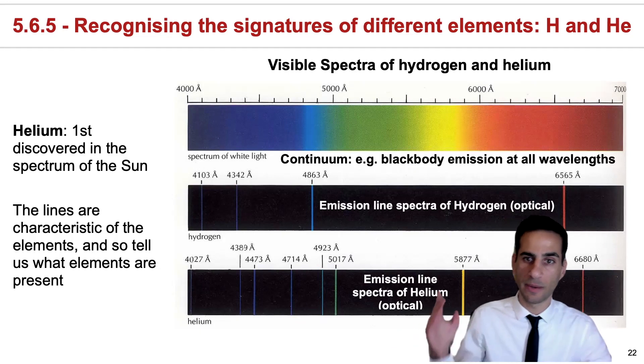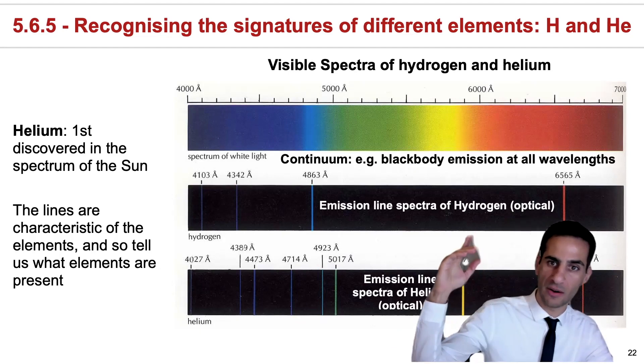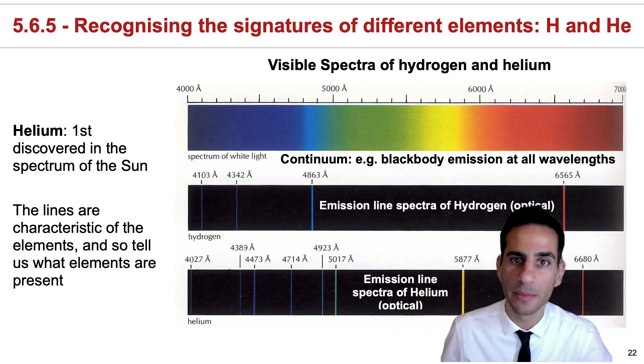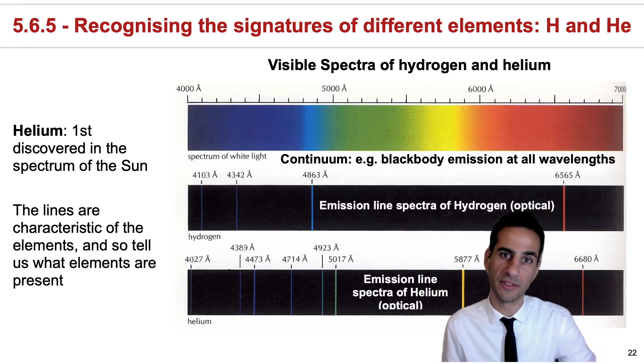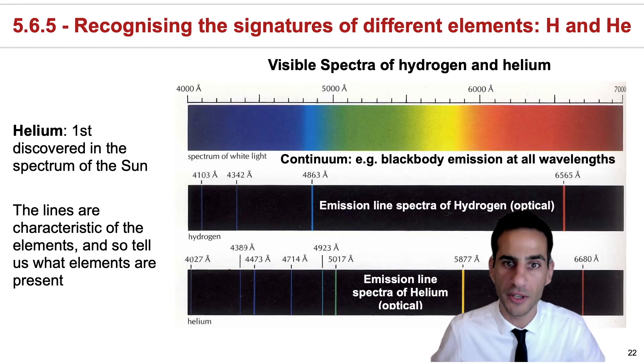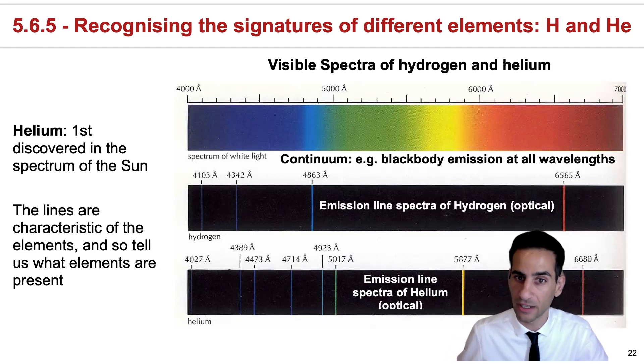So far, we've talked about black body radiation and now about hydrogen in emission. But the same sort of logic will apply to any element. Things just become more complicated. Because you have more electrons, then there will be many more transitions and potential for transitions.